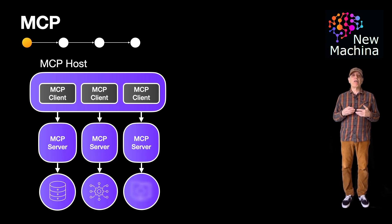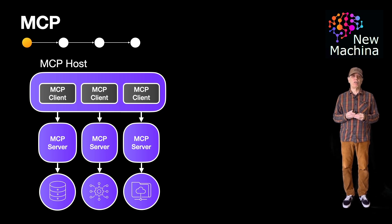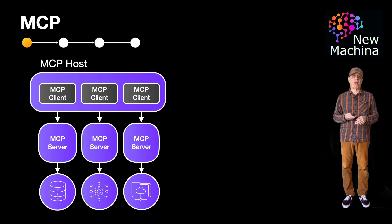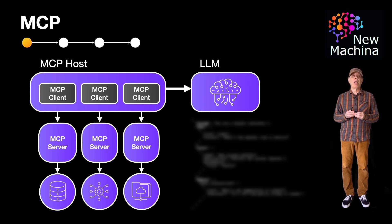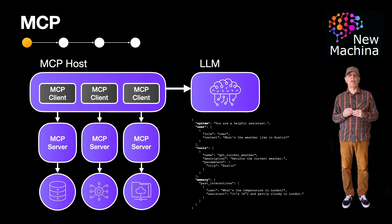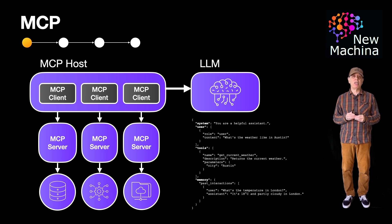Next is the MCP server. The MCP server handles the generation of structured context, memory, and tool invocation. The MCP server makes the actual calls to tools such as databases, APIs, file systems, etc. And finally, we have the LLM. The LLM interacts with the MCP host by receiving prompts and providing responses. The structure and format of these prompts and responses are defined by the MCP standard.